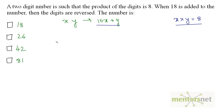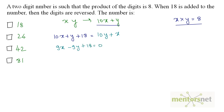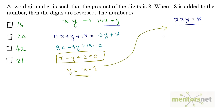Adding 18 to the number reverses the digits: 10x plus y plus 18 equals 10y plus x. Simplifying: 9x minus 9y plus 18 equals 0, and dividing by 9 gives x minus y plus 2 equals 0, so y equals x plus 2. Substituting into x times y equals 8: x times x plus 2 equals 8, so x squared plus 2x minus 8 equals 0. Solving this quadratic, the roots are x equals 2 and x equals negative 4.